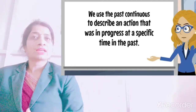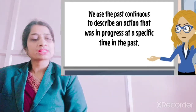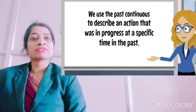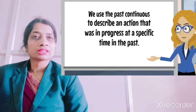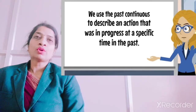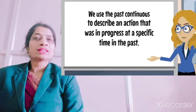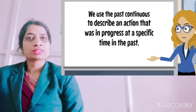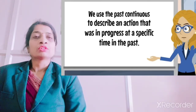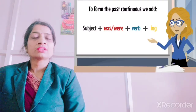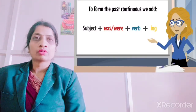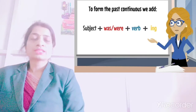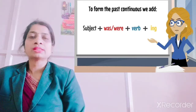We use past continuous to describe an action that was in progress at a specific time in the past. Jisse humein pata chalta hai ki yeh jo actions hain, yeh past mein huye hain — toh woh past continuous tense mein aate hain. And the formula for writing past continuous tense is: subject plus was or were, plus ing form of verb, plus object.